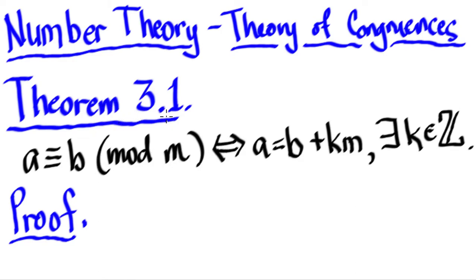Theorem 3.1 states that A is congruent to B modulo M if and only if A is equal to B plus KM for some K in the integers.